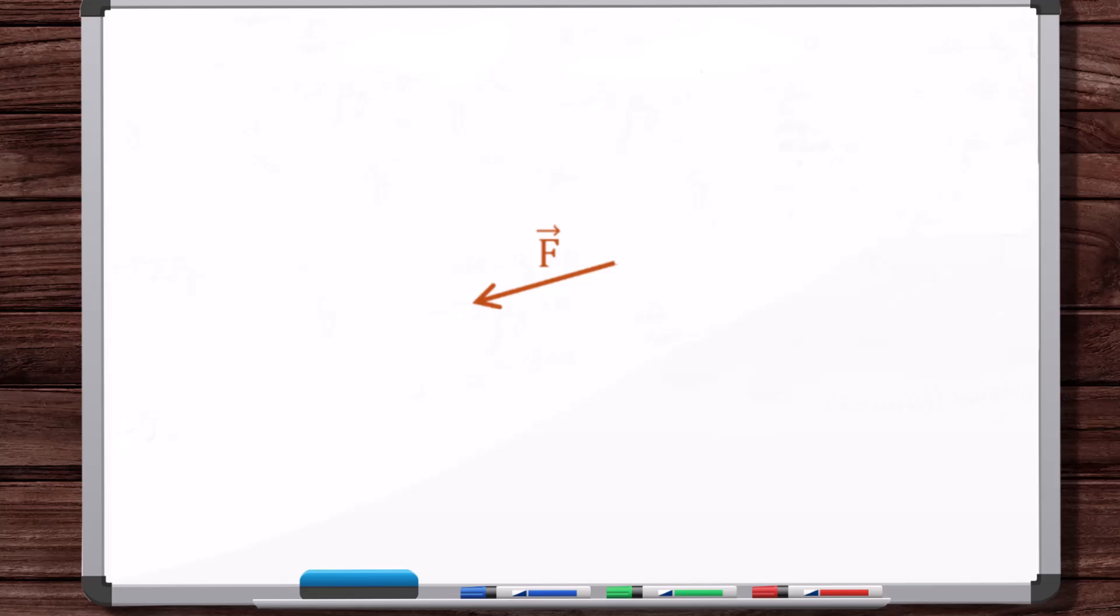the principle of transmissibility applies for any force, which means that you can treat the force as a sliding vector. And what sliding vector means is that you can change the position of the force vector, but not its orientation. You can change the position of the force vector by sliding it anywhere you want along its line of action.